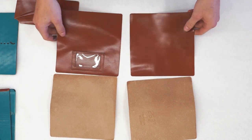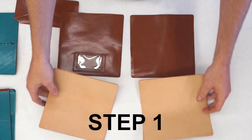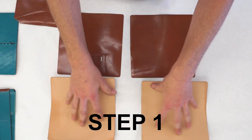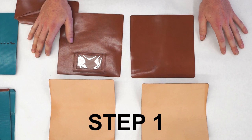Before you start doing any gluing, the first thing you want to do is tool and finish your vegetable tan clutch backs any way you like.